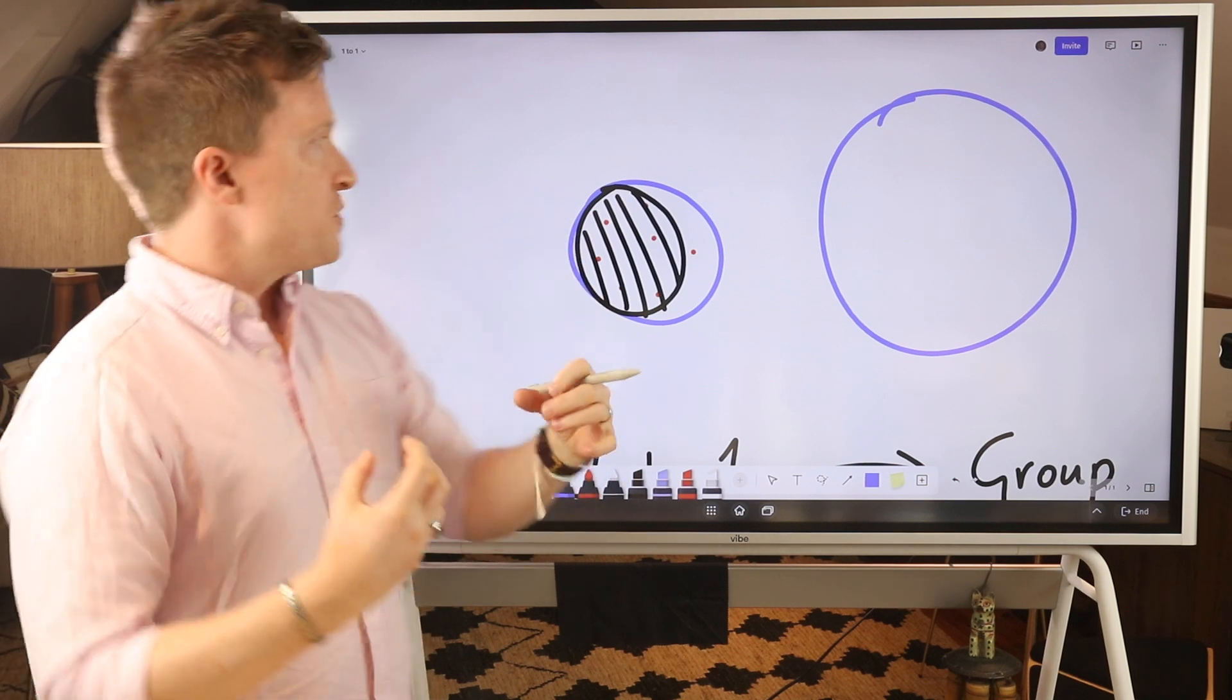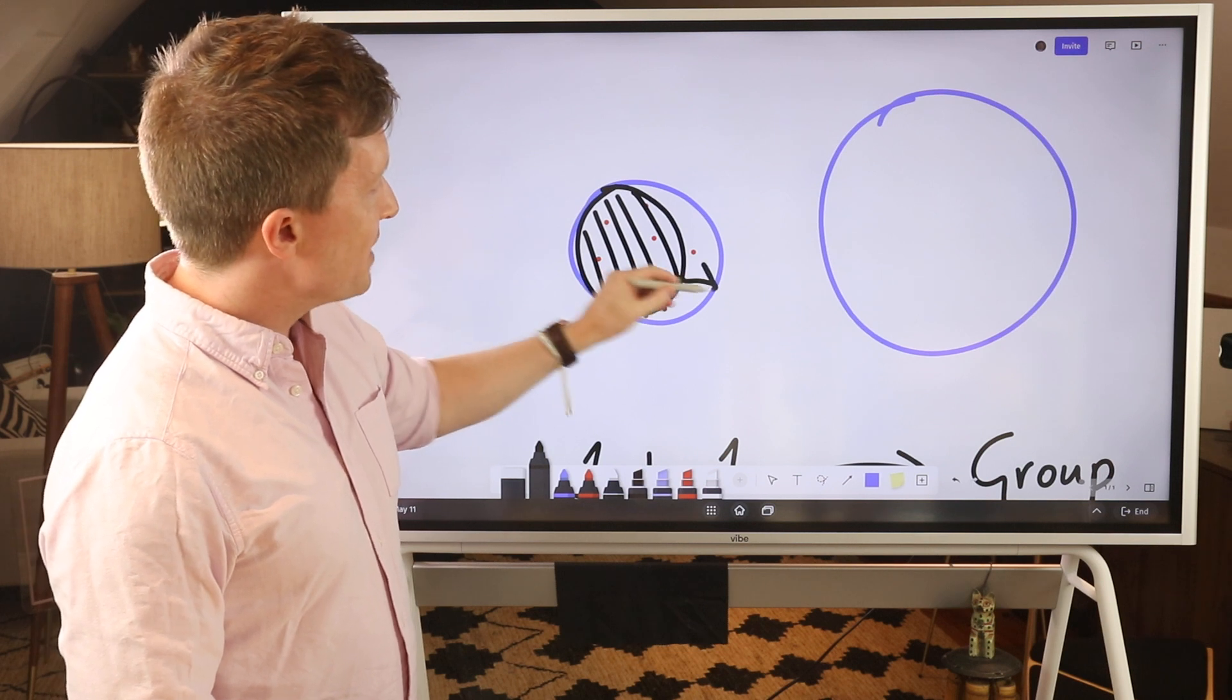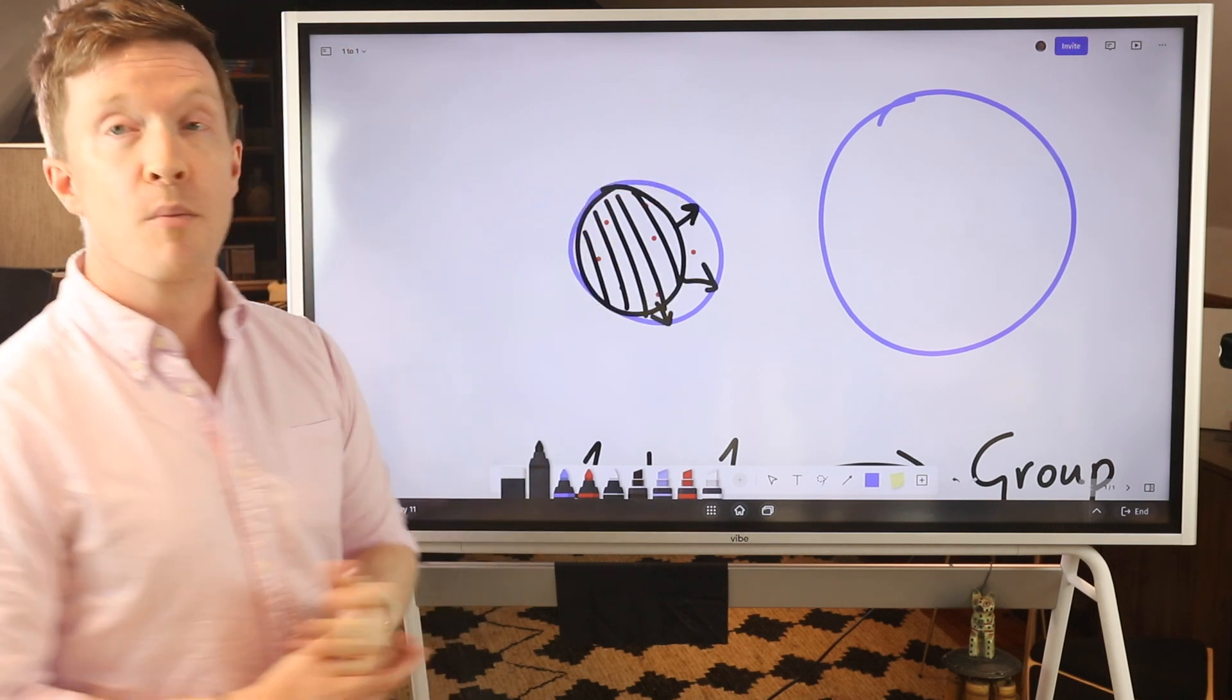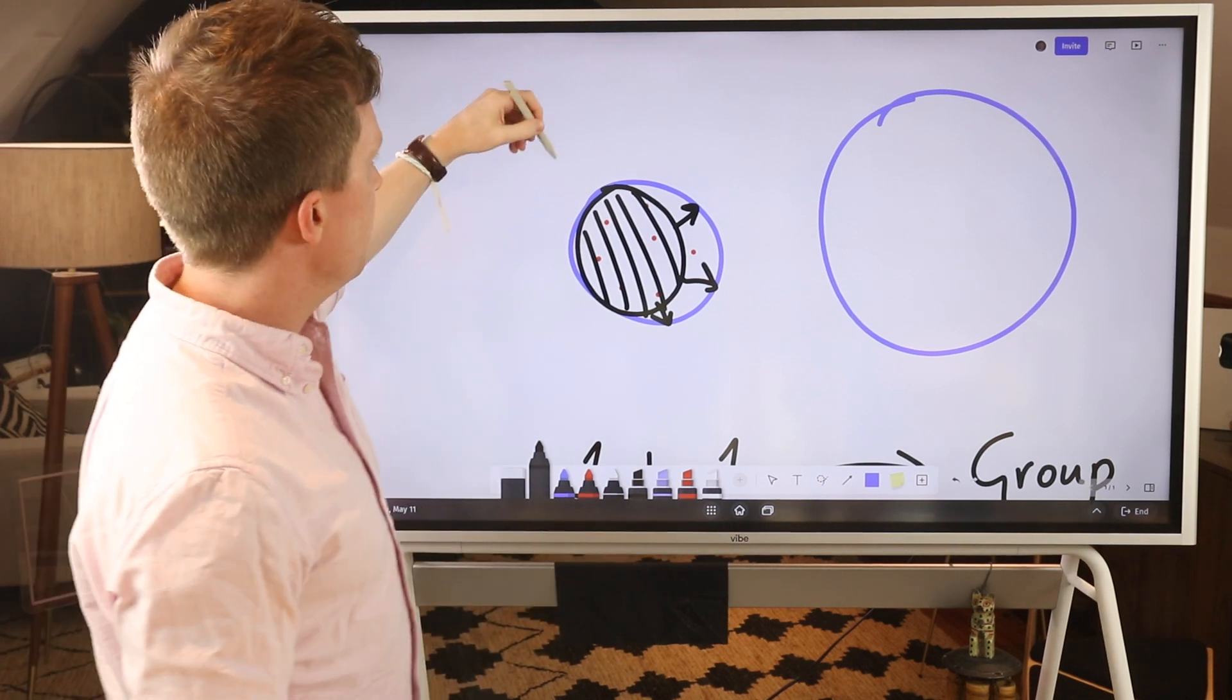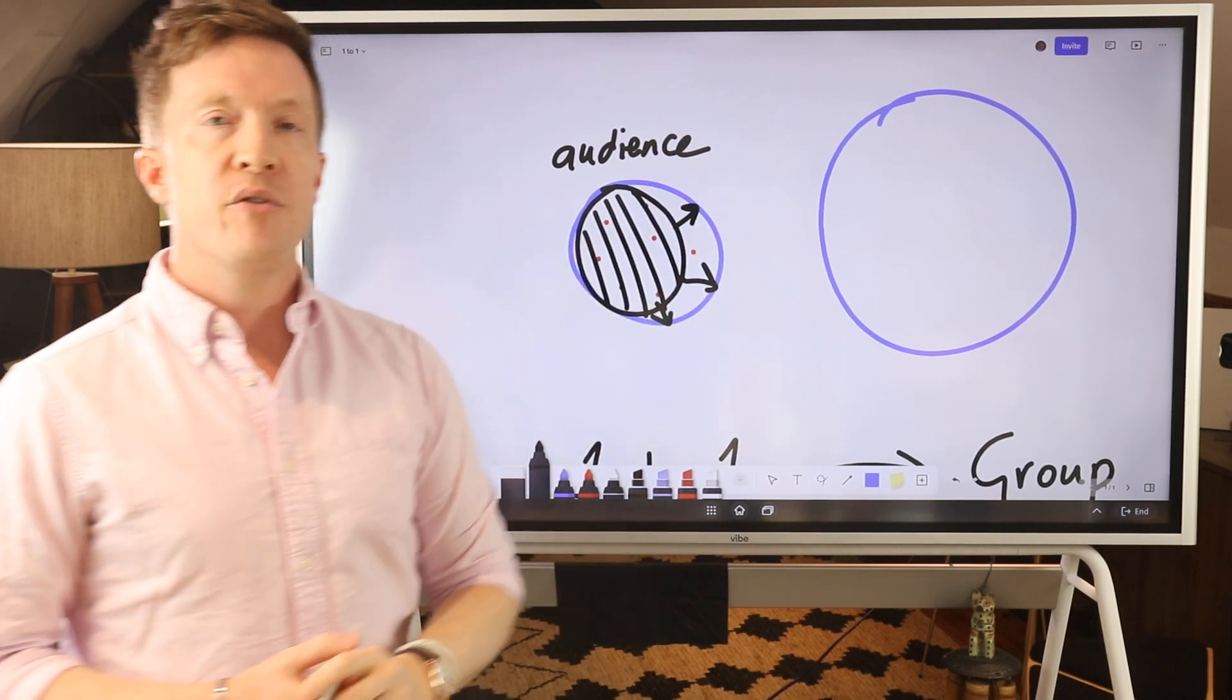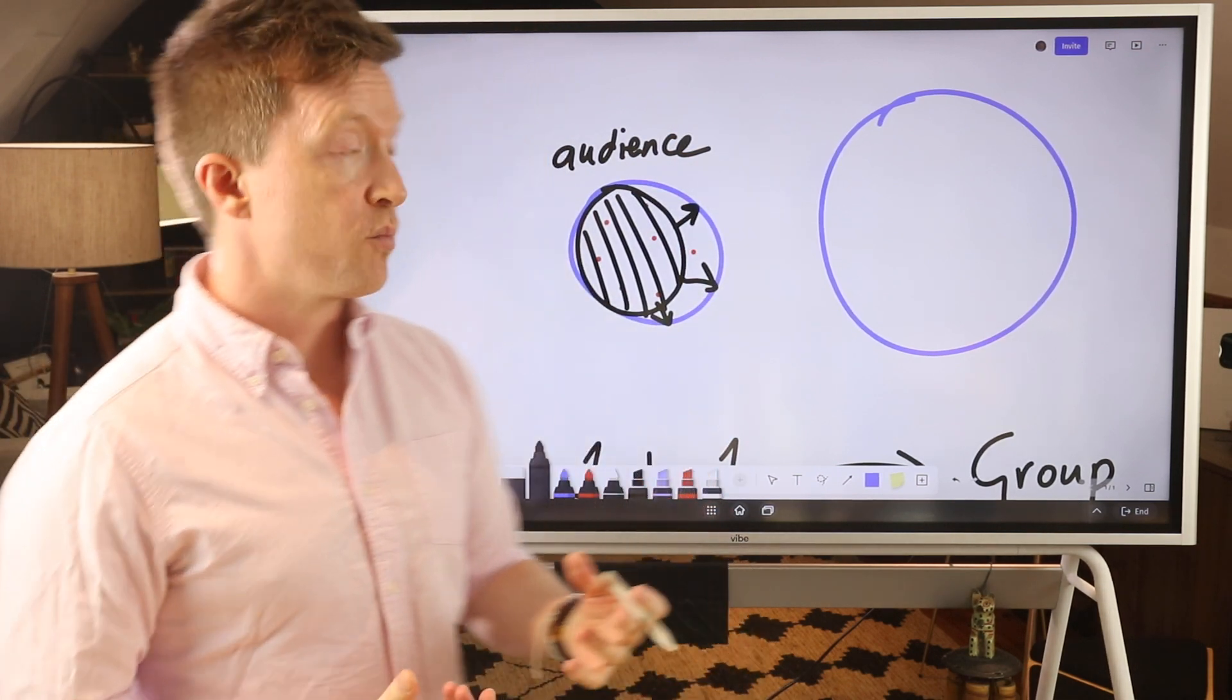Now when numbers start to drop off, you need to sell more people into that group program, but the problem is you run up against the hard limit of your audience. Your audience is only so big, and that's the core of the problem, right? Your problem is an audience problem, and if you don't have an audience big enough, you're not going to be able to continue to sell people into these group programs.